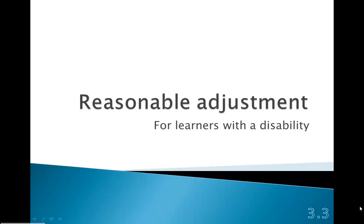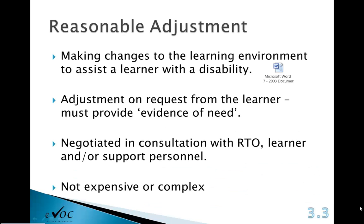Section 3.3: Make decisions on reasonable adjustments with the candidate based on the candidate's needs and characteristics. In order to make some decisions, it's a good idea to have different support tools ready to offer the candidate for their disability. This has to be negotiated in consultation with the registered training organisation, the learner, and any specialist support personnel involved. It can't be expensive or too complex for the operations of assessing.